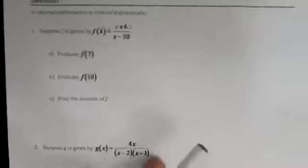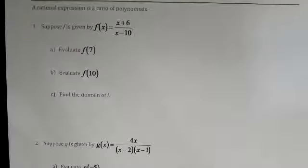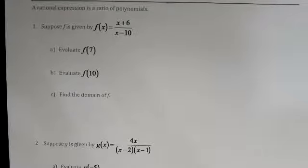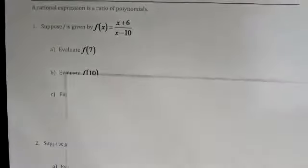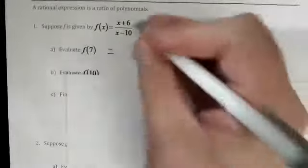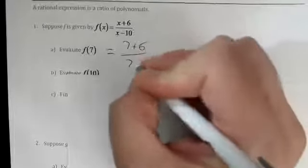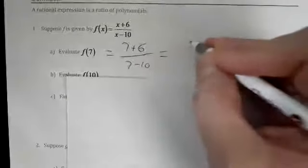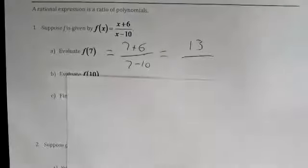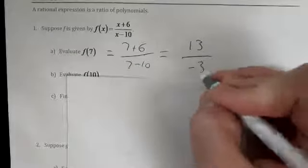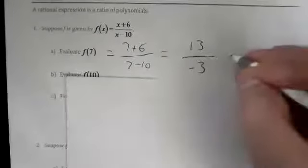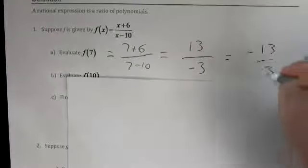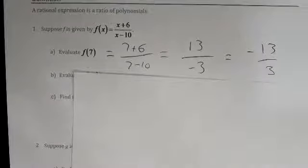Now we're going to multiply and divide things that look like polynomials instead of numbers. Suppose f(x) = (x + 6) / (x − 10). If we want to evaluate f(7), we plug 7 in everywhere there's an x. So we get (7 + 6) / (7 − 10), which gives us 13 over negative 3, or negative 13 thirds. So evaluating f(7) means we are plugging 7 into the fraction.